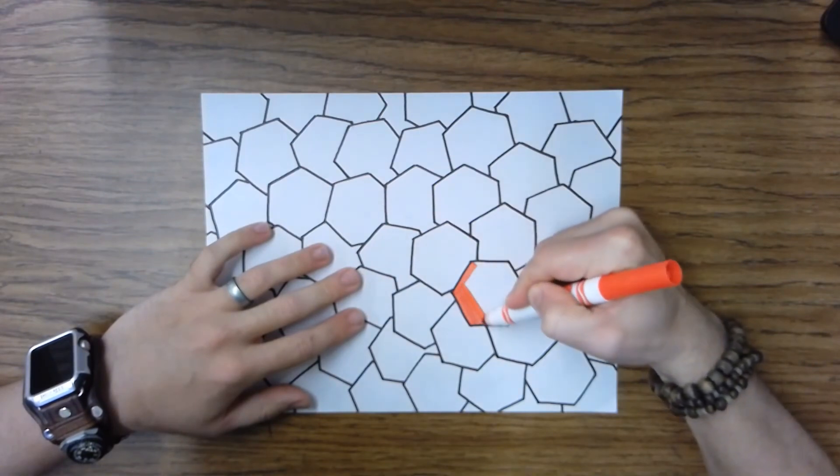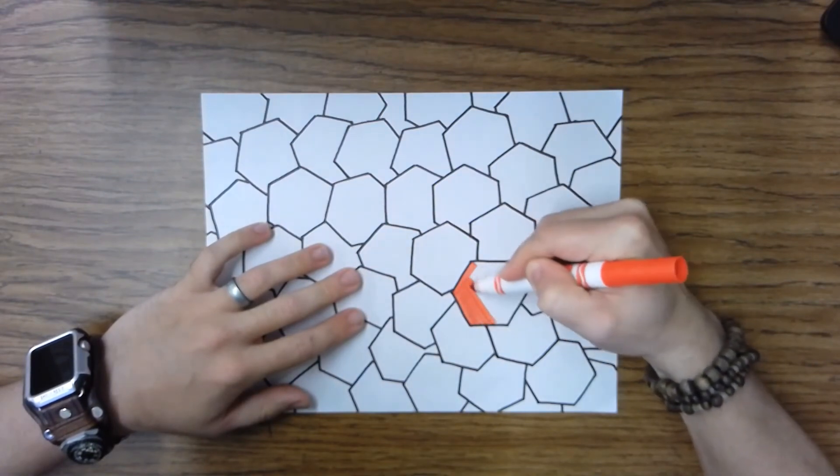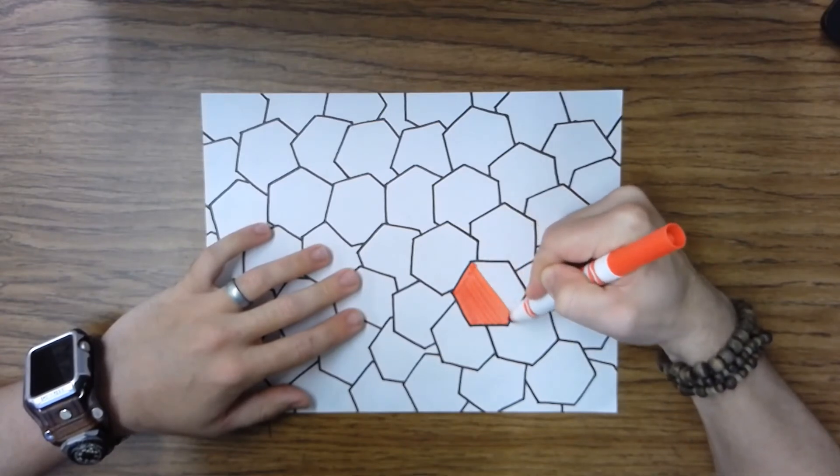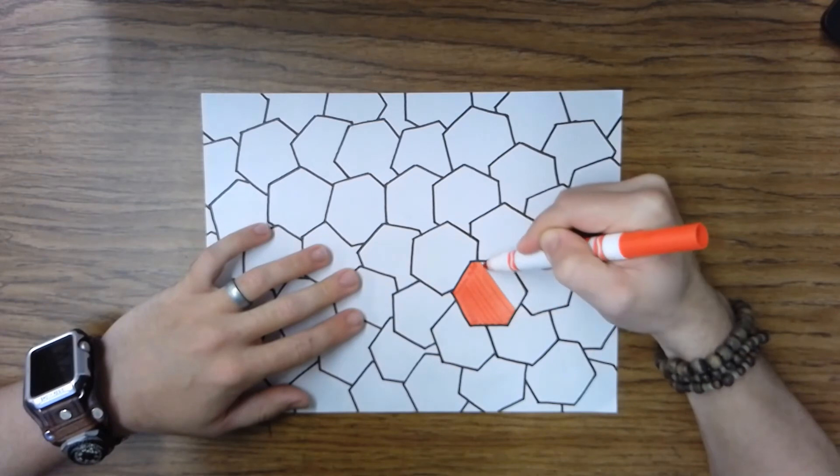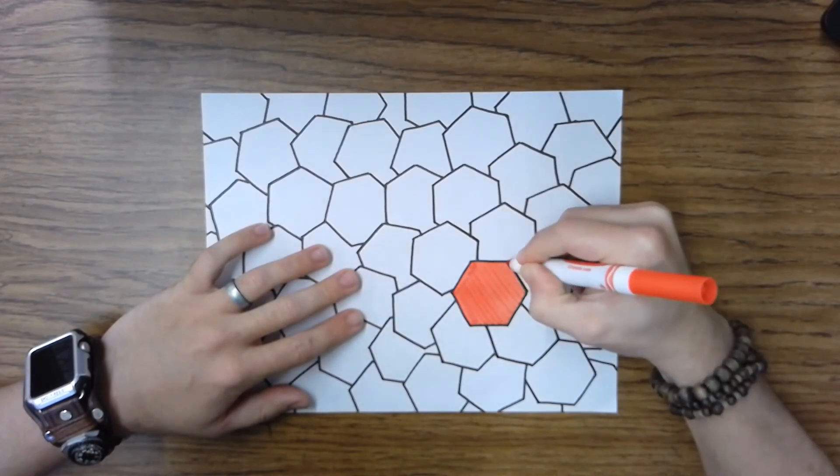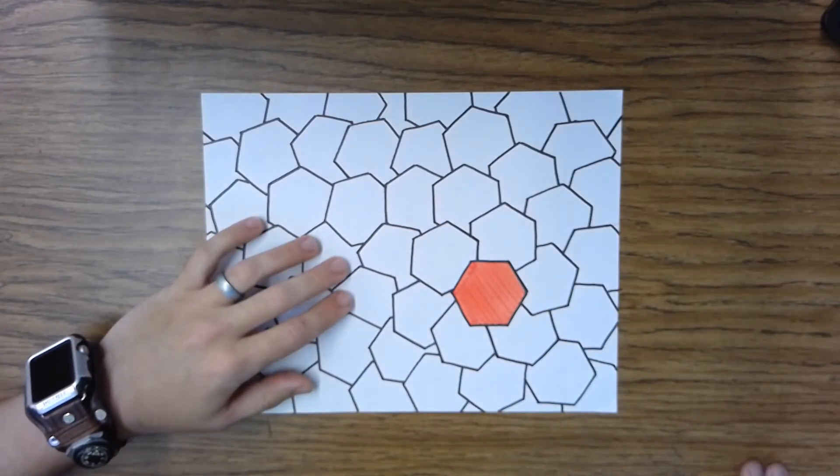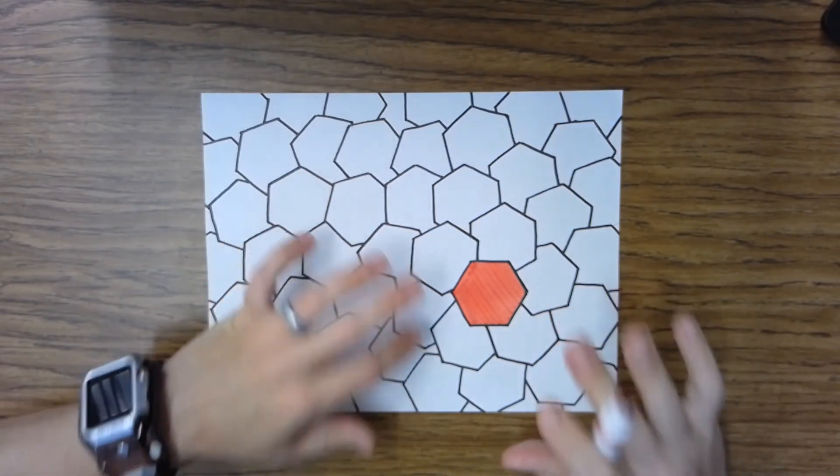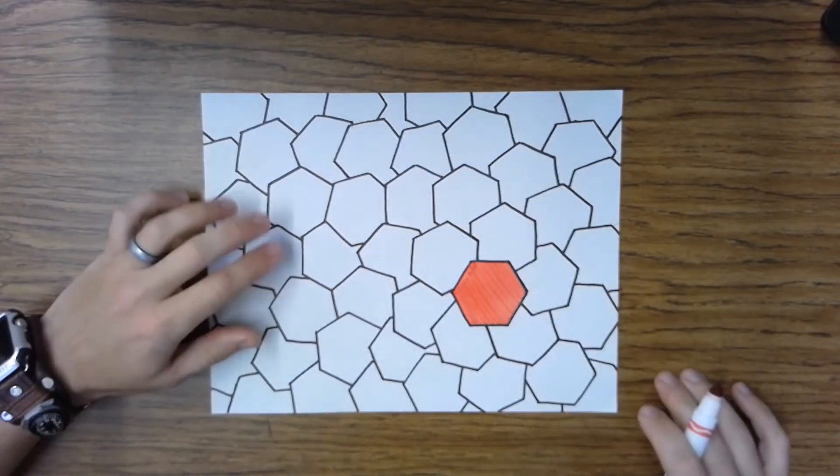I'm just going to color the whole thing in nice and clean all over the whole shape. There we go. And I might do a couple of other ones here and there, but I'm really not going to move far away from this one.